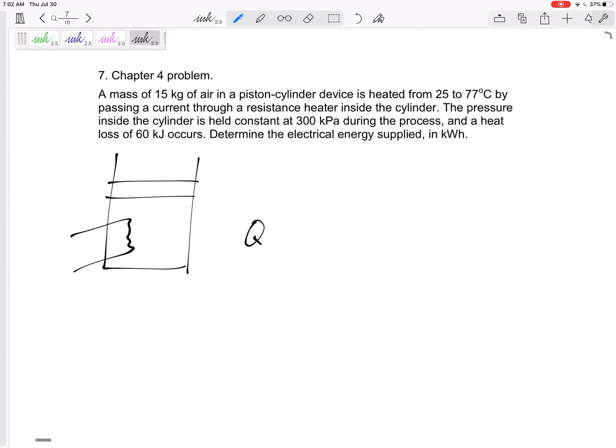Alright, so this is Q plus W equals delta E, right? And that E could be U, kinetic energy, potential energy. And it could be U could be H, alright, remember that.